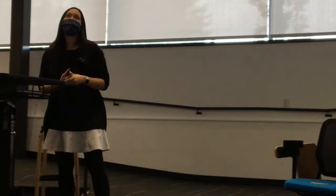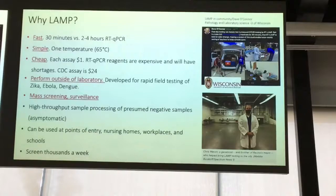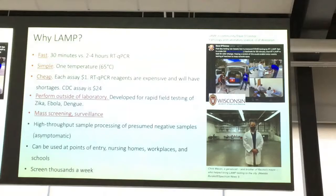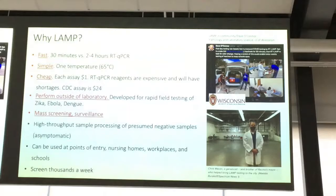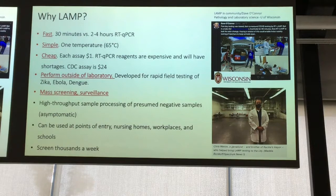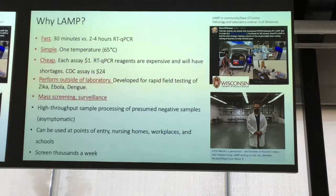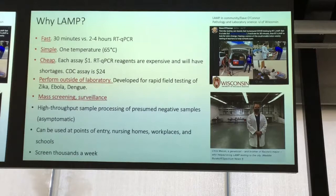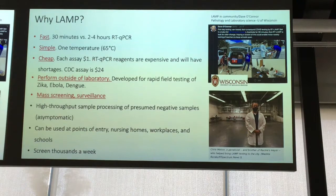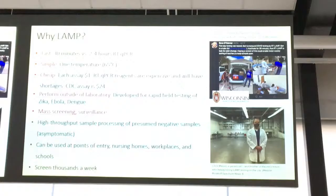LAMP takes 30 minutes versus two to four hours for qPCR, at a single temperature. The CDC assay is about $24, while LAMP is about a dollar. You won't run out of the enzyme — it's very easy to produce. LAMP has been used for field diagnostics for really dangerous viruses like Zika, Ebola, and dengue. This is the first time we've had to adapt it for massive population testing. There's been a lot of recent research on how to make LAMP tests, put them into devices, put them onto paper, and make them faster.